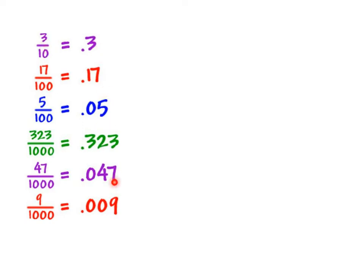To convert a fraction to a decimal, you're going to want to get the fraction to have a denominator that is 10, 100, 1,000, or 10,000 — but most likely you're only going to have to go up to 1,000. Once you have 10, 100, or 1,000 in the bottom, it's very easy to convert it to a decimal. Because 3 tenths as a fraction is the same as 3 tenths as a decimal. You just take the numerator and put the last number of the numerator in the place value of what your denominator says. So here the denominator is 10, so the 3 goes in the tenths place value.